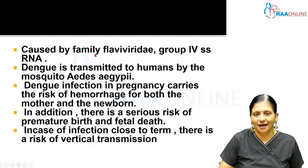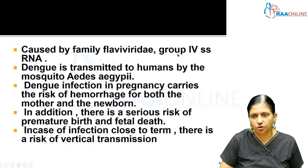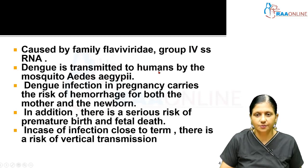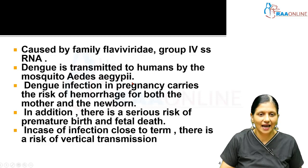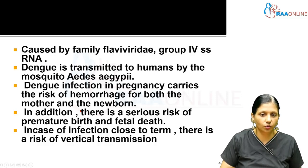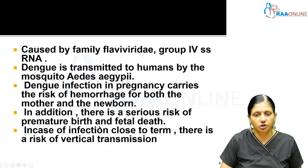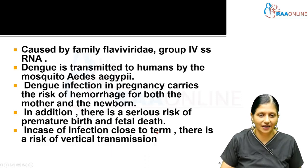Dengue is caused by the family Flaviviridae, a group 4 single-stranded RNA virus. Dengue is transmitted to humans by Aedes aegypti, and Dengue infection in pregnancy carries the risk of hemorrhage for both the mother and the newborn, with serious risk of premature birth and fetal death.